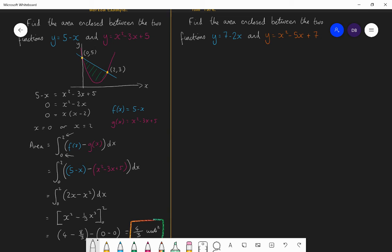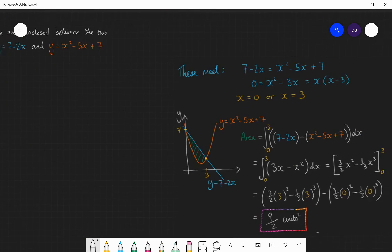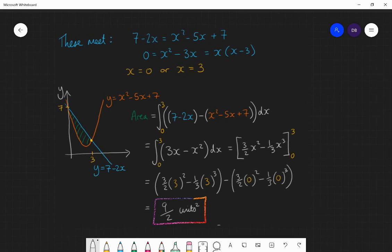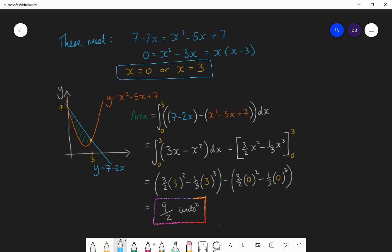So the solution to this is as follows. Here's one I prepared earlier. So firstly, you solve them simultaneously and they meet at x is 0 or x is 3. The graphs are shown here. One is a linear graph, y equals 7 minus 2x. The other is quadratic and they both meet at 0, 7.